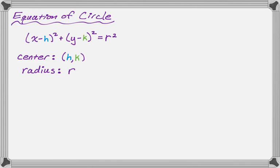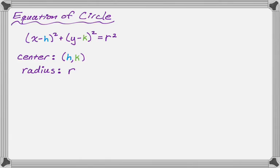Let's do an example where we write the equation of a circle. What I like to do is identify the center — in this case, negative four, positive three — and then identify the radius. We go from three to seven, so the radius is four. In terms of our equation, those are the point h, k, and this four is equal to r. So now it's just substitution.